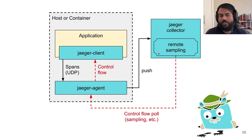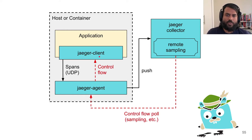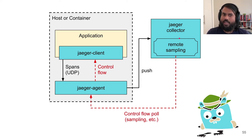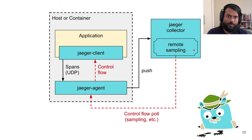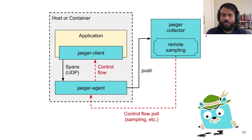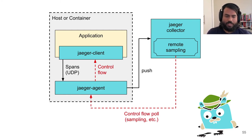Remote sampling really allows the Jaeger collector to control the amount of traffic that Jaeger clients and applications send to it. For instance, with a sampling rate of 100%, the Jaeger client on every service sends 100% of spans to the collector. Conversely, with something like one in a thousand, the traffic sent to the Jaeger collector is greatly reduced. This remote sampling is an important configuration that allows you to control the traffic handled by the rest of your system.